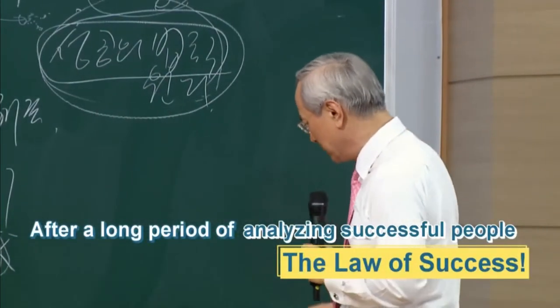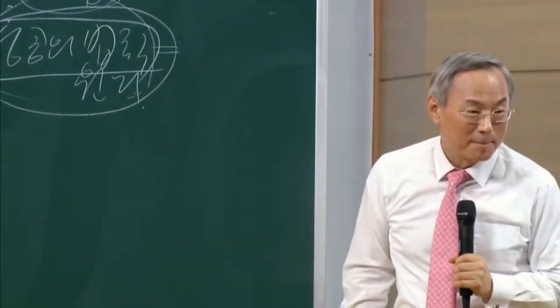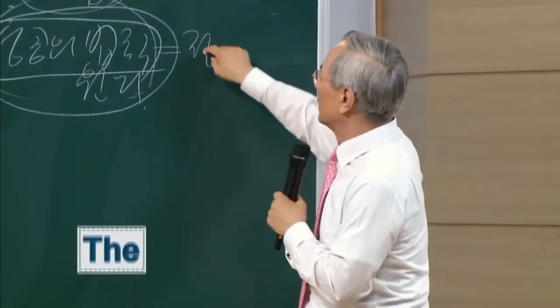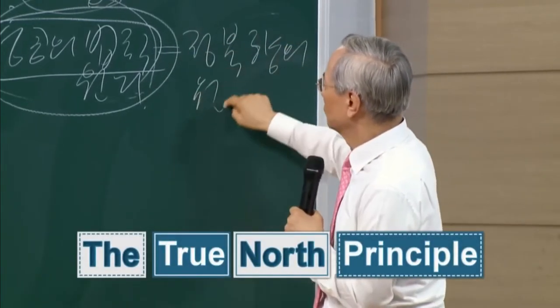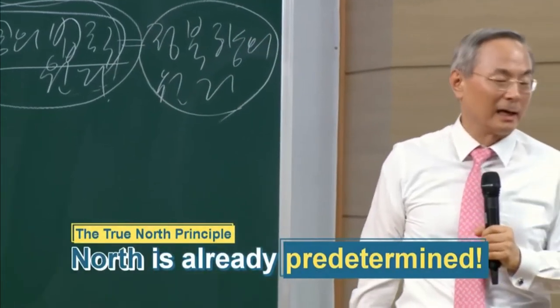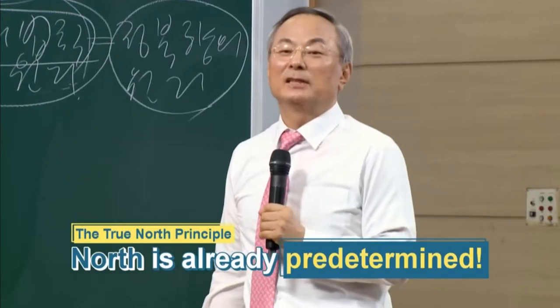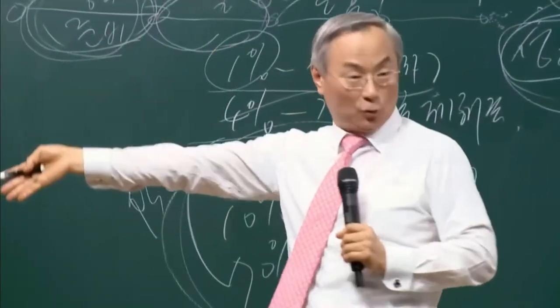This law isn't something that gets set by just anybody. It's like the true north principle, a principle found by Stephen Covey, meaning that north has already been predetermined. If you look at a compass and it says north, then that means you're looking north.